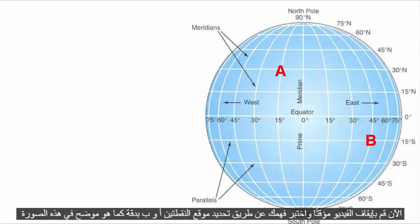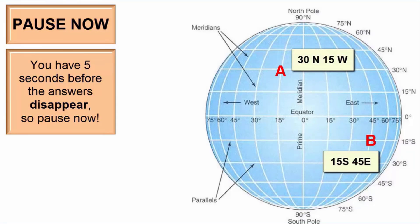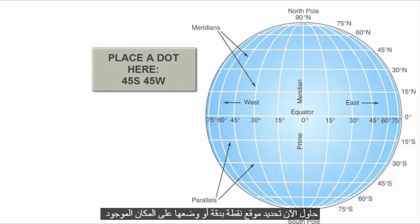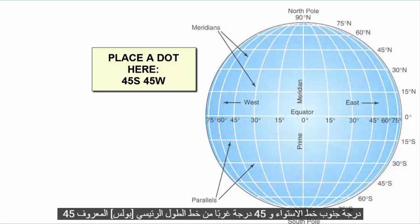Now pause the video and test your understanding by accurately locating points A and B as shown in this image. Then try to accurately locate or place a dot on the spot that is located 45 degrees south of the equator and 45 degrees west of the prime meridian.